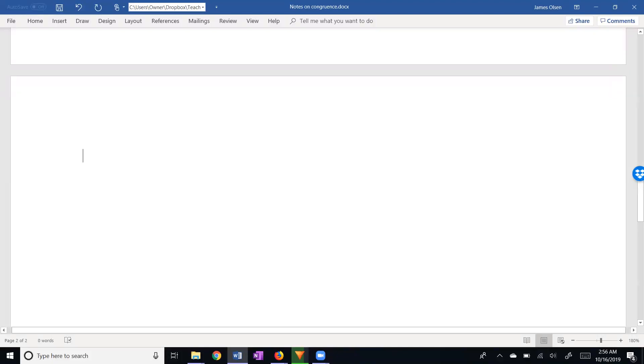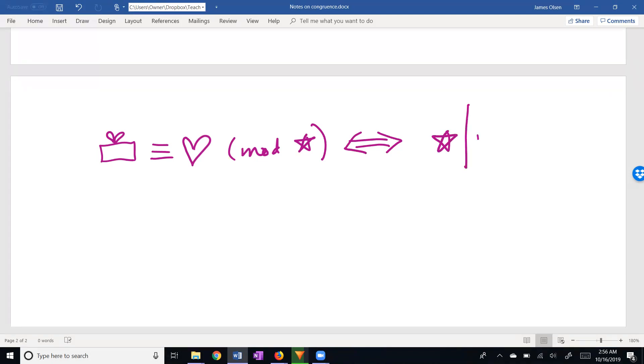For emphasis, let me state this definition of congruence one more way. Let's say we have a rectangular package with a bow on it is congruent to a heart mod star. This is true if and only if the star divides evenly into the package with the bow minus the heart. This definition goes both ways.